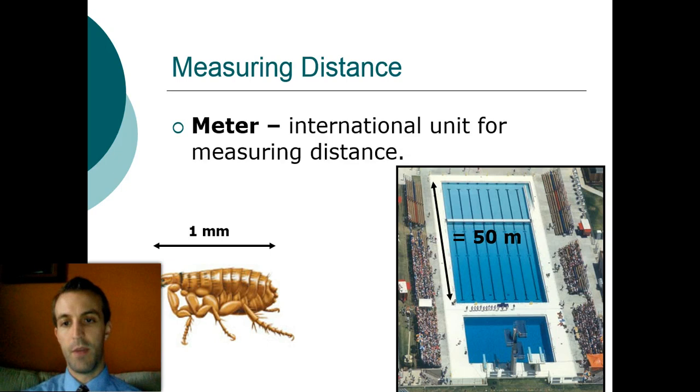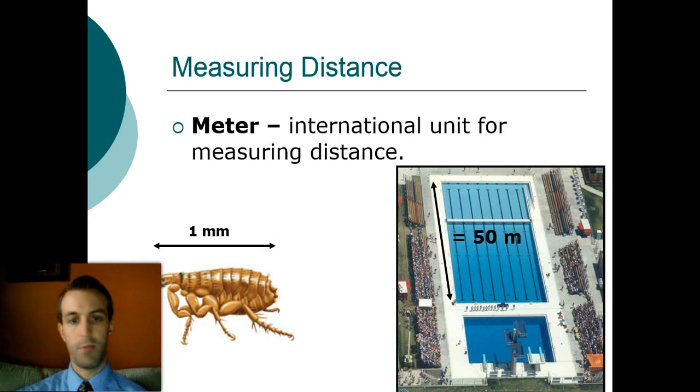In this case we have a meter being used. This Olympic-sized swimming pool is 50 meters in length, whereas this flea is one millimeter in length.